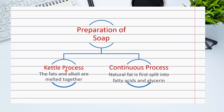The difference between both processes is that the fats and the alkali are melted together in the kettle process, whereas in the continuous process, the natural fat is split first into fatty acids and glycerin before the fatty acids are mixed with the alkali.